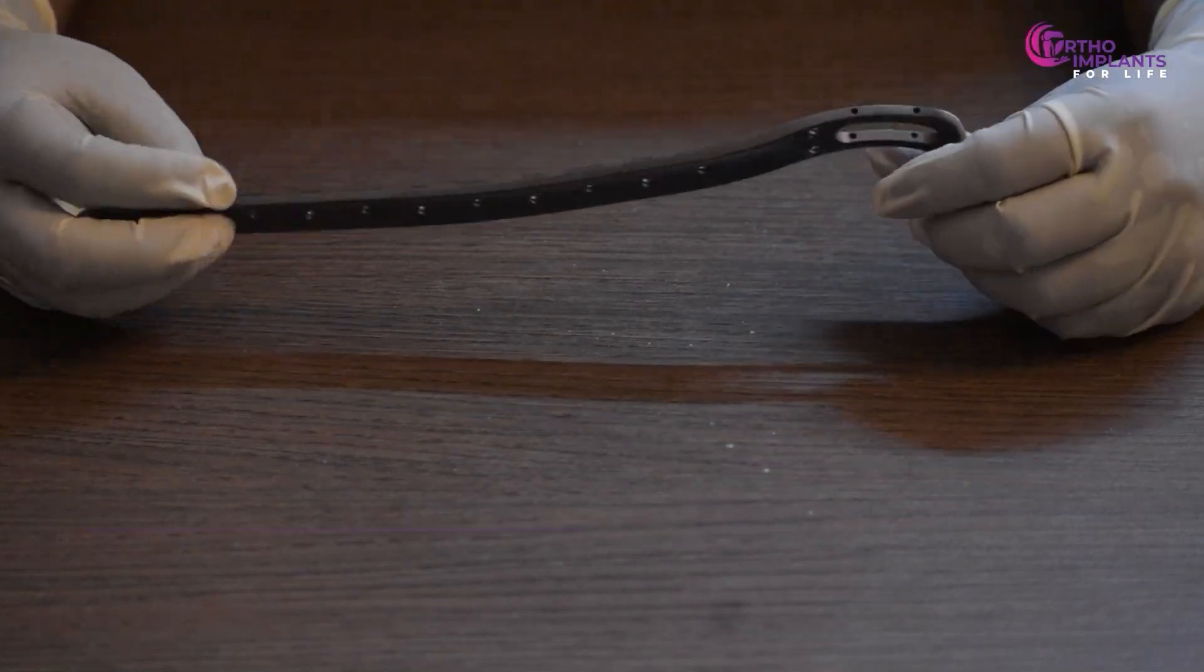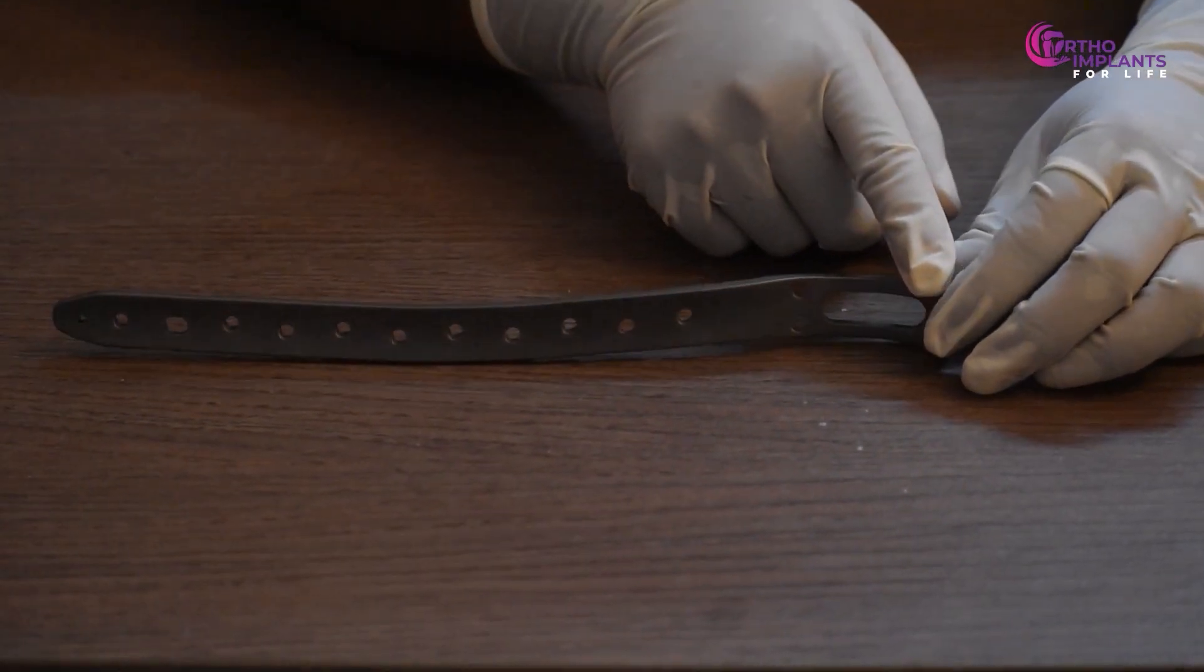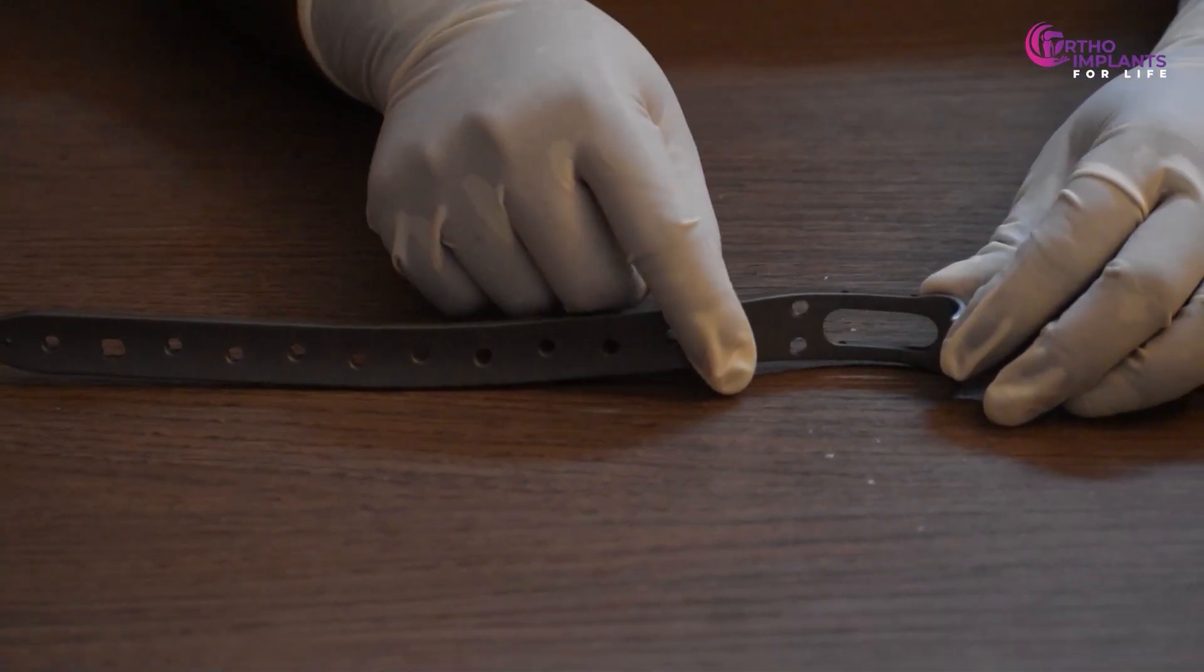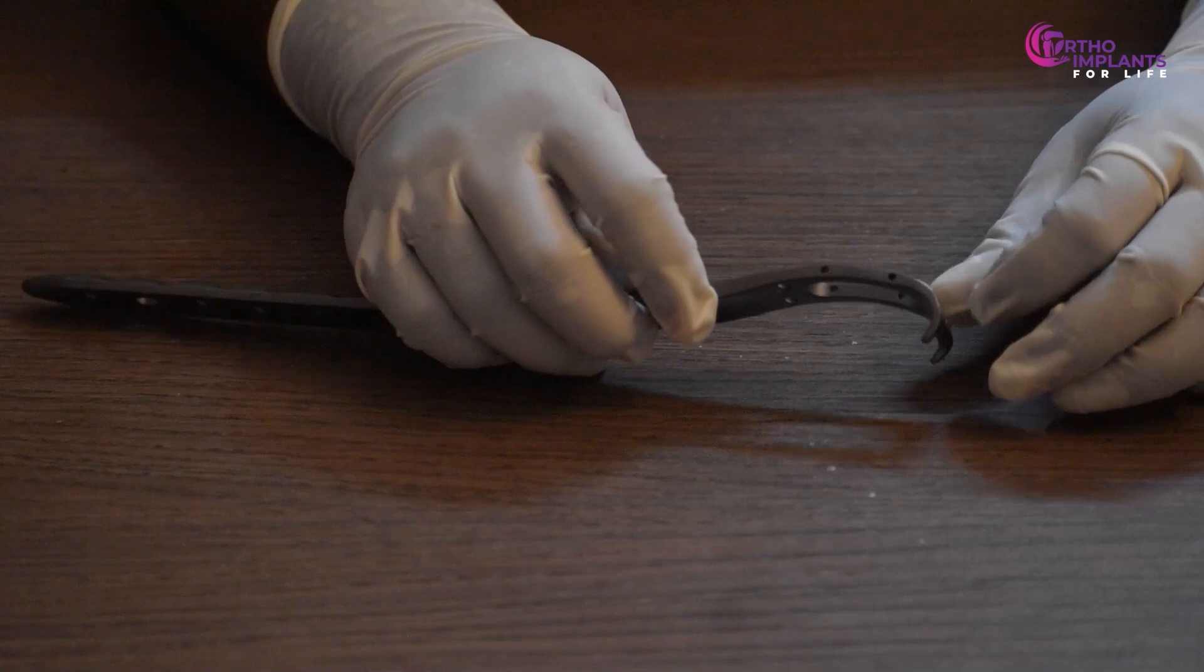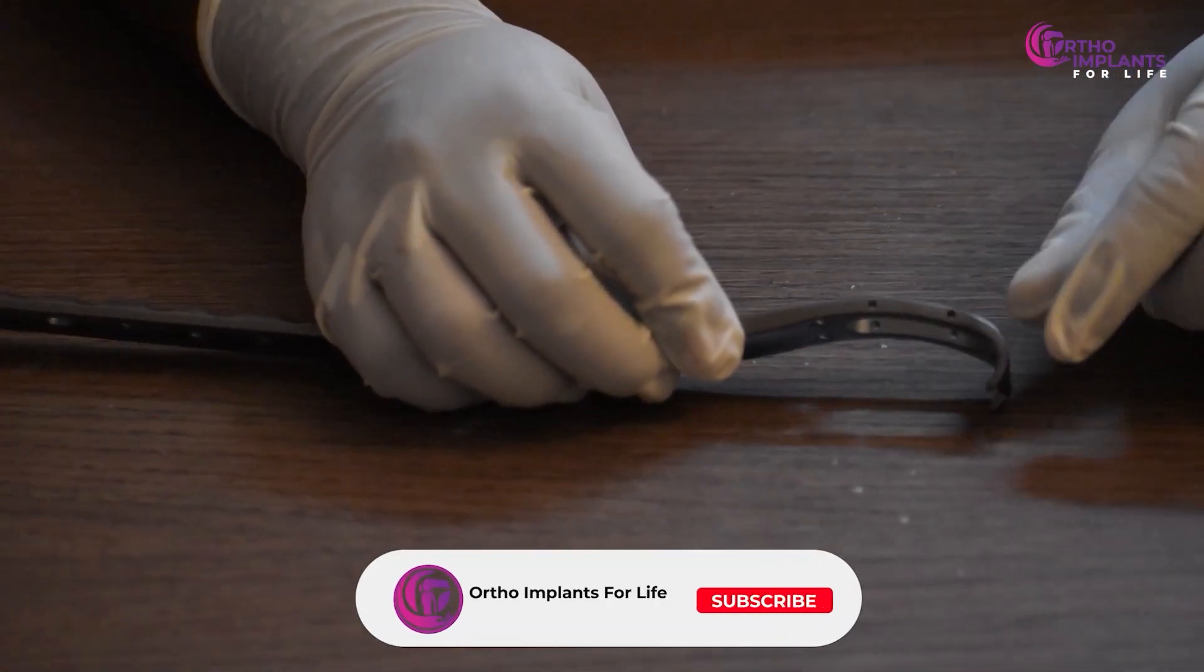The plate itself is called the periprosthetic plate. It's generally used for patients who have had a bipolar or prosthesis procedure. The upper two holes in the plate are for passing the cable.